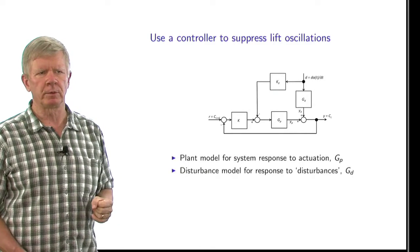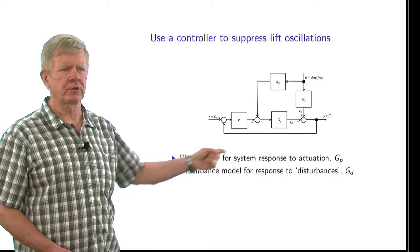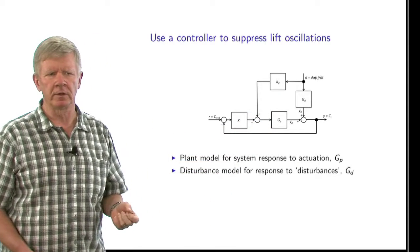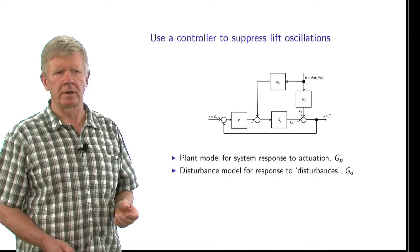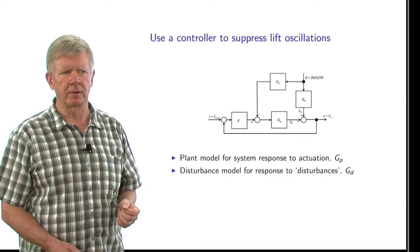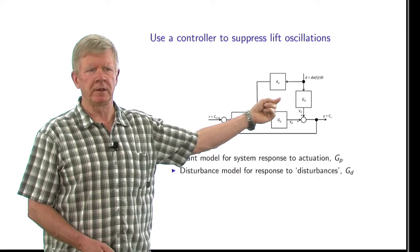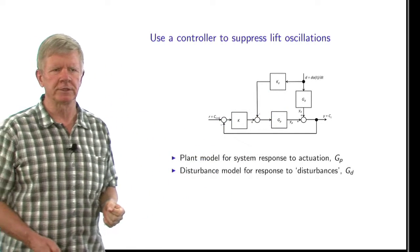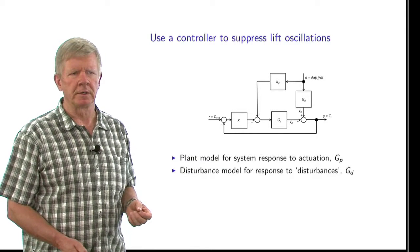At this stage, what we need are two models of the system. The first is called the plant model, G sub P, and that tells us how the lift is going to vary as we change the actuator that is our active flow control actuator acting on the blade. The second model that we need is G sub D, our disturbance model. And this tells us how the lift coefficient changes when the blade itself is pitching dynamically.